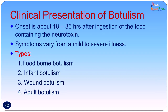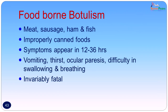The clinical presentation of botulism: onset is 18 to 36 hours after ingestion of food containing the neurotoxin, depending on the anaerobic conditions and how long the bacteria have been multiplying. Symptoms vary from a mild disease to severe illness. There can be various types of botulism. The most common type seen in this patient is food-borne botulism, but we can also get infant botulism, wound botulism, and adult botulism. Food-borne botulism is usually obtained from infected meat, sausages, ham, and fish — specifically improperly canned foods; even vegetarian foods which are improperly canned can result in food-borne botulism. Symptoms appear within 12 to 36 hours.